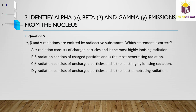Question 5: Which statement is correct about alpha, beta, and gamma radiation from a radioactive substance? Alpha radiation consists of charged particles and is the most highly ionizing radiation — this is correct.